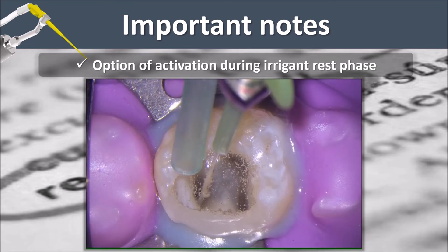Turn the suction off and use the iVac to activate sodium hypochlorite or EDTA in the irrigate rest phases.